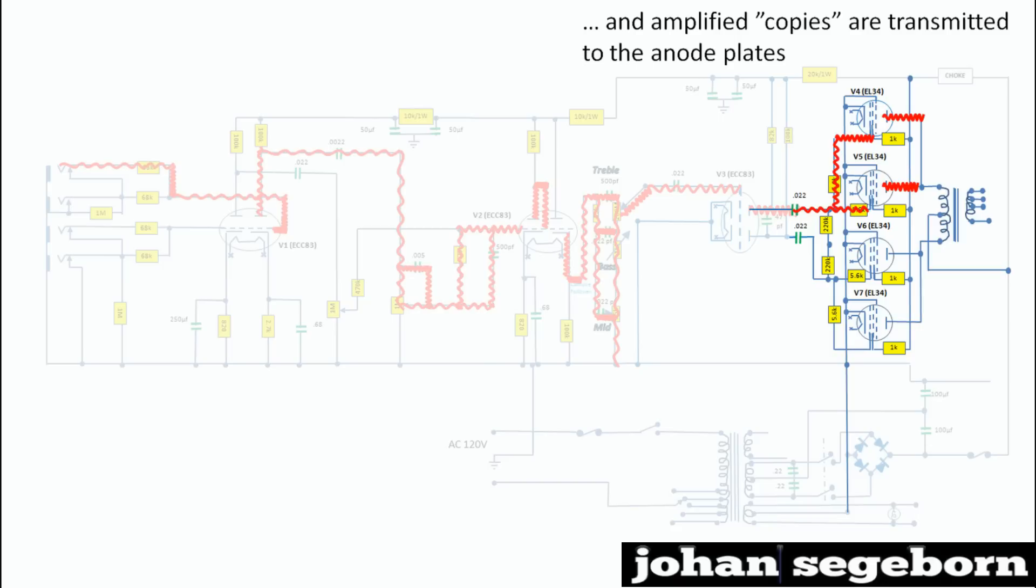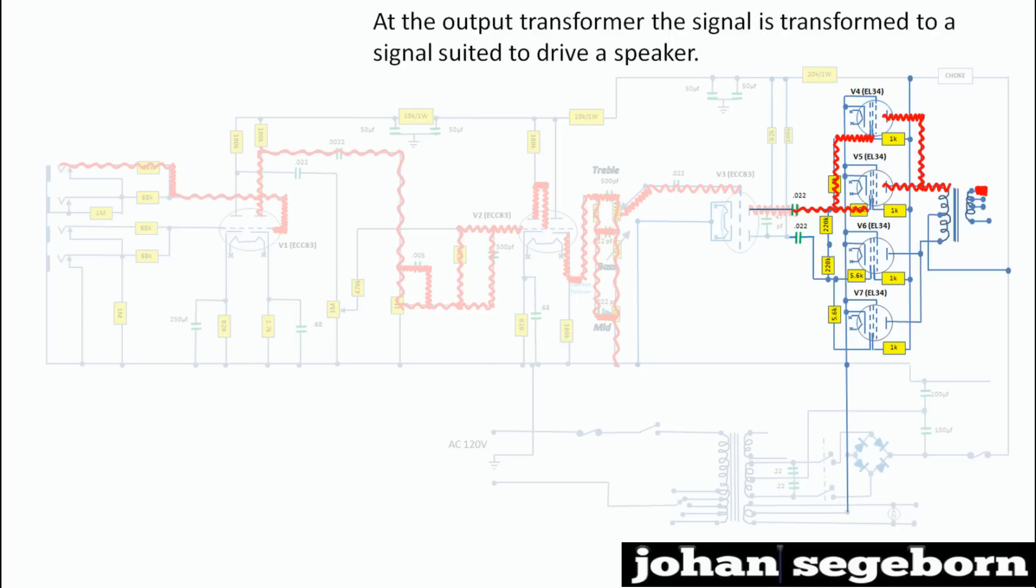And transmit amplified copies to the anode plates. Then the output transformer transforms the signal to signals suited to drive a speaker. And that's maybe 20 volts and a couple of amps and your basic 4, 8 or 16 ohms of impedance.